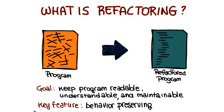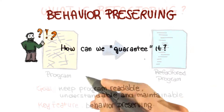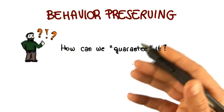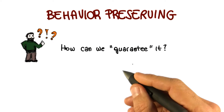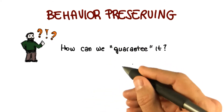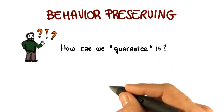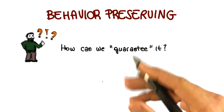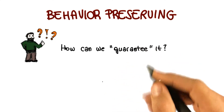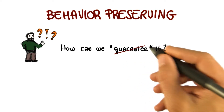I want to stress once more a key feature of refactoring, which is that it is behavior preserving. But how can we ensure that the refactoring is behavior preserving? In other words, how can we ensure that the program does the same thing before and after applying a refactoring? Unfortunately, in general, there are no guarantees.